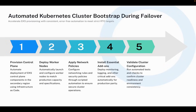Once a failover begins, the cluster in the secondary region must be ready to take over quickly. First, the EKS control plane is deployed automatically using infrastructure as code so that no manual steps are required. Second, the worker nodes are launched with the same capacity and configuration as production, ensuring a smooth transition. Third, network policies and security rules are applied programmatically so that the cluster remains secure and compliant. Fourth, all essential add-ons such as monitoring, logging, and ingress controllers are installed automatically. Finally, automated validation tests confirm that everything is in the correct state before any traffic is shifted, giving us confidence that the environment is truly ready.